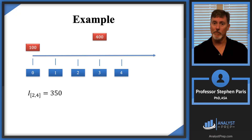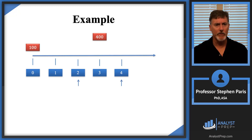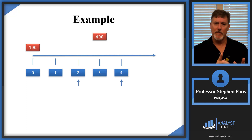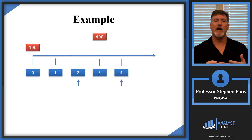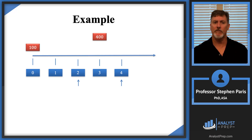Now I want to show an alternative approach that's equally valid. Instead of combining everything, we look at the interest earned between time 2 and time 4 based on the $100 deposit separately, then look at the interest earned on the $400 deposit separately, and add those two amounts together.